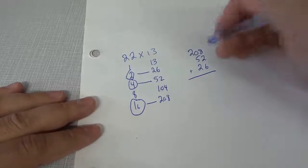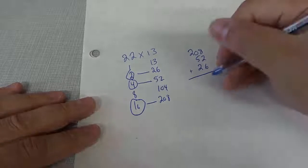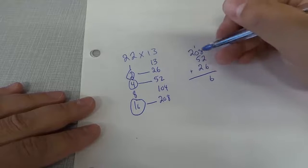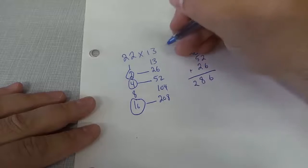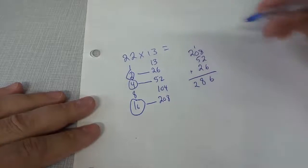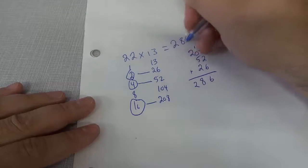Now we're going to take these, we're going to add them up together. 8 plus 2 is 10, plus 6 is 16. Carry the 1. 5 plus 2 is 7, plus 1 is 8 and 2. The answer is 286.